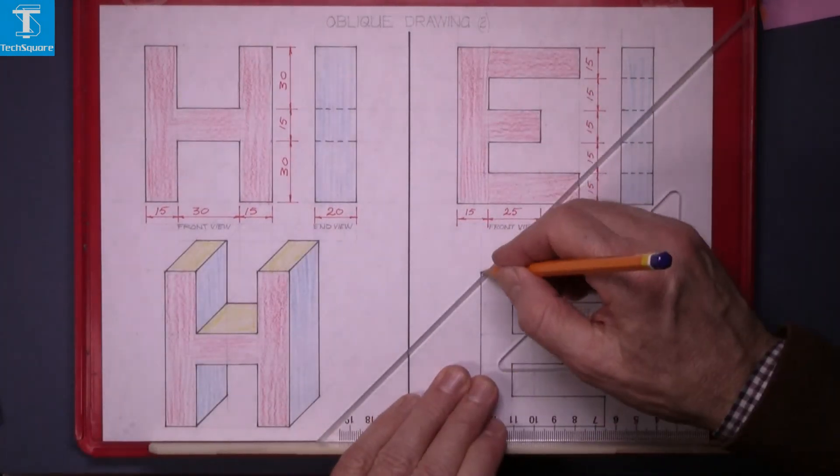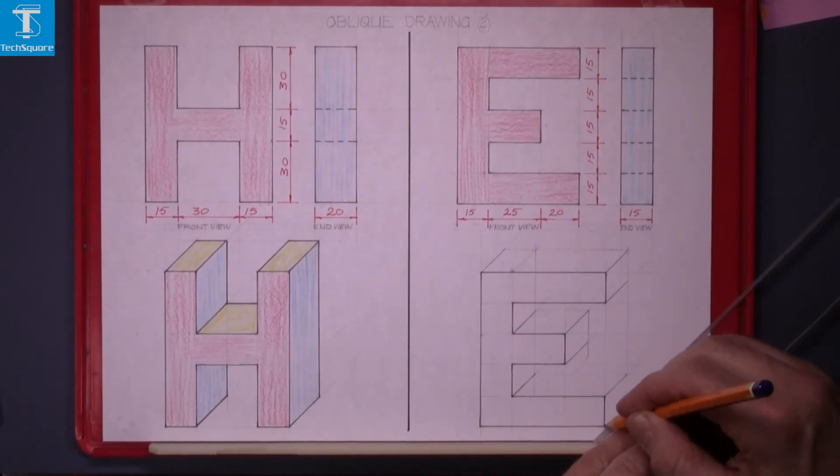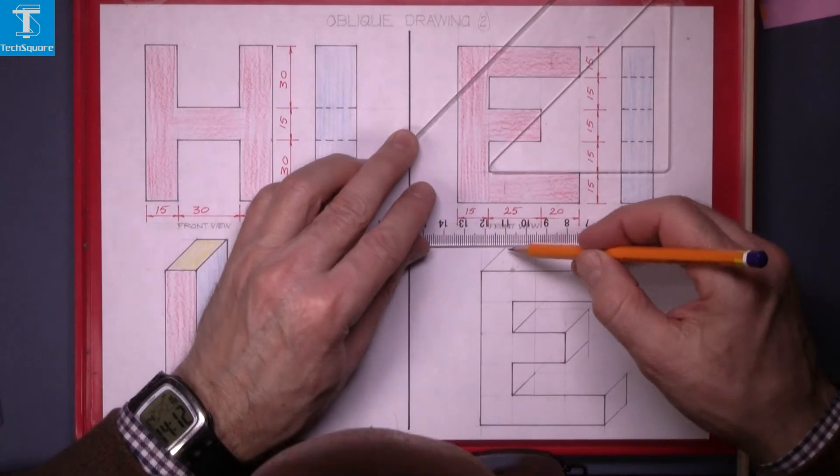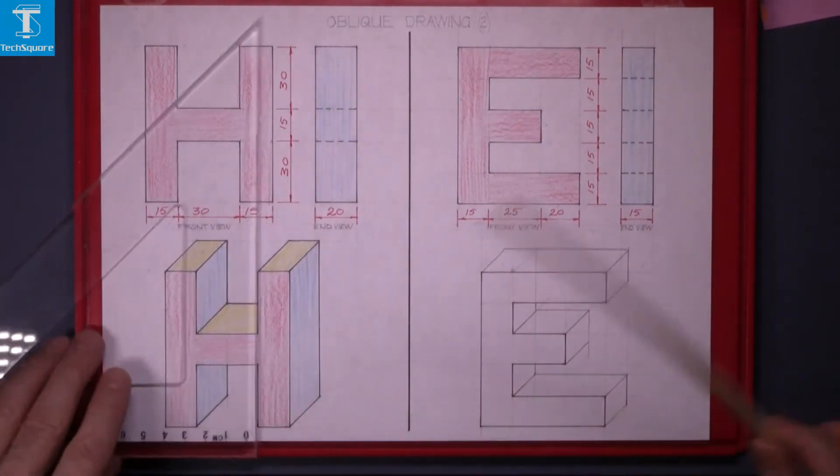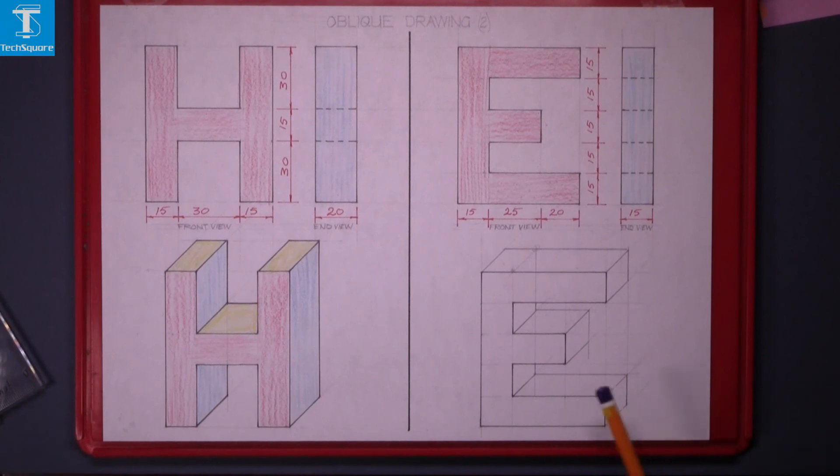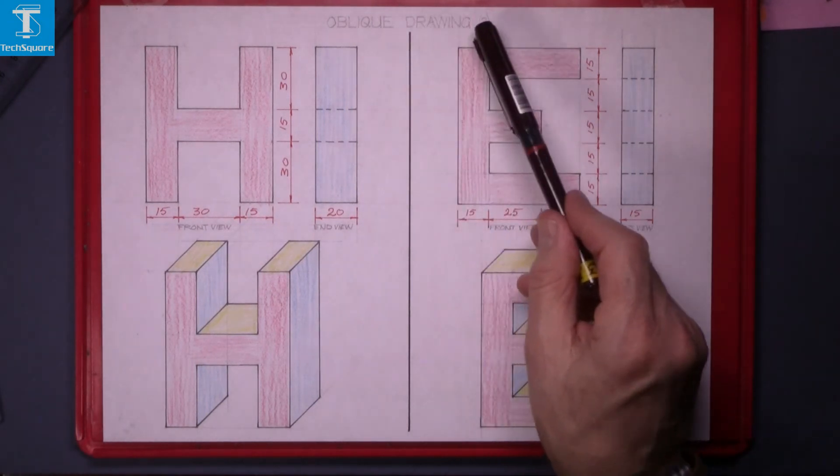Now line in the drawing. And that's your drawing now complete. And now to add a little bit of colour to it. That's it. And that's oblique drawing 2 complete.